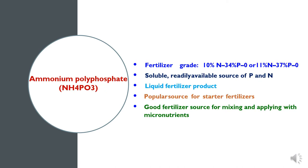The next water soluble Phosphatic fertilizer is ammonium polyphosphate, which is a liquid fertilizer product and a soluble and readily available source of Phosphorus and Nitrogen. It contains 34 to 37% Phosphorus along with Nitrogen content in the form of ammonium. This fertilizer has good mixing compatibility with micronutrients application.